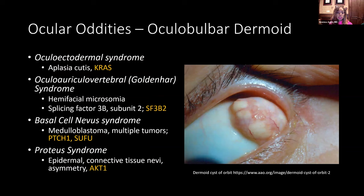Oculobulbar dermoids are seen in Goldenhar syndrome — these patients can have hemifacial microsomia. There's a memorable case from fellowship where a patient came in with preauricular pits for sinus excision, and while asleep in the OR, the team flipped her eyelids and found oculobulbar dermoids, leading to a full workup. So always double check — you might pick up something that changes the course of a patient's life. Oculobulbar dermoids are also seen in basal cell nevus syndrome with palmar pits and multiple basaloid hamartomas, and in proteus syndrome where patients may have connective tissue and epidermal nevi.